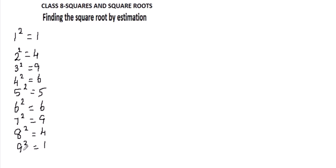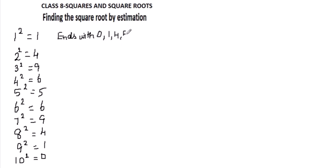10 square is going to end with 0. So a number which ends with 0, 1, 4, 5, 6, 9 are only called perfect square numbers, and hence you can find the square root of these numbers only. The numbers which are ending with these digits only — you can find the square root. For other numbers, we can say 100% surely that they are not perfect square numbers.